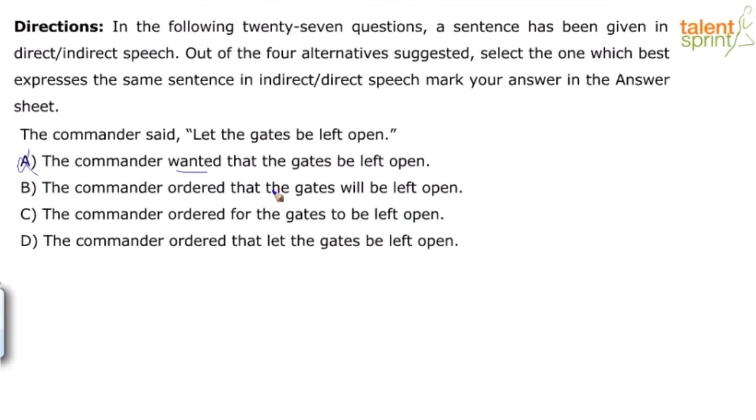B: the commander ordered that the gates will be left open. Incorrect - will as a modal there doesn't make sense. C: the commander ordered for the gates to be left open. D: the commander ordered that let the gates be left open. Here again, sentence construction is grammatically incorrect. So our option is option C: the commander ordered for the gates to be left open.